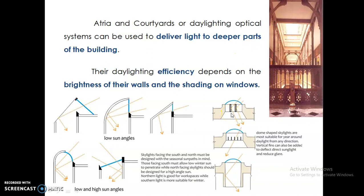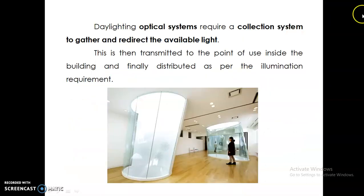Atriums and courtyards can also have optical systems to improve lighting. Sun-catching systems installed in rooftops on atriums and courtyards can reduce harsh sunlight while letting the interior spaces adjacent to the courtyard benefit from reflected light. These optical systems use a collection of optical fibers installed in roofs or atrium areas that help transport the light to deeper interior spaces.